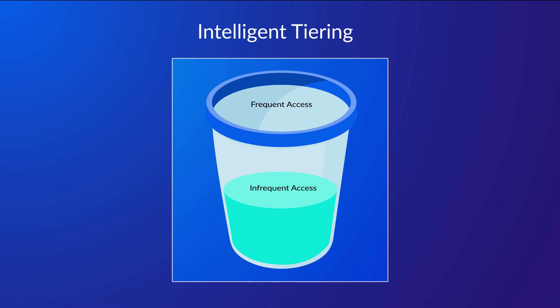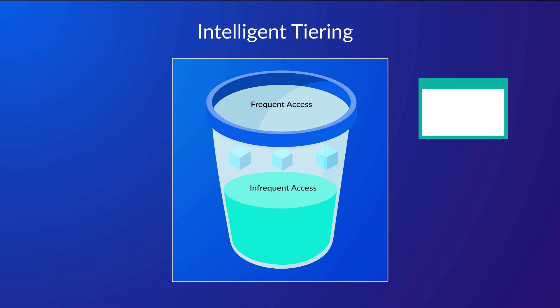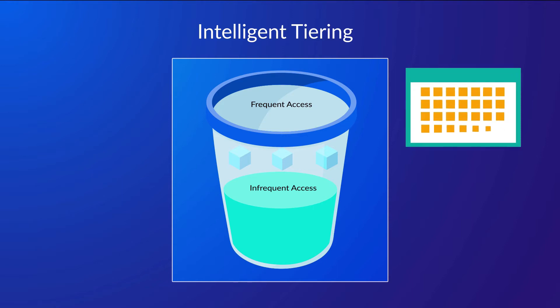When objects are moved to Intelligent Tiering, they are placed within the Frequent Access tier, which is the more expensive of the two tiers. If an object is not accessed for 30 days, then AWS will automatically move the object to the cheaper Infrequent Access tier. Once that same object is accessed again, it will automatically be moved back to the Frequent tier.